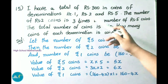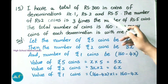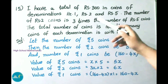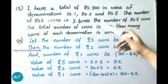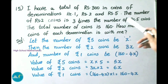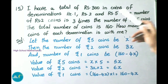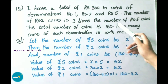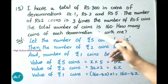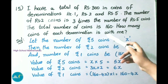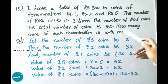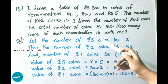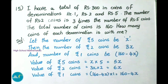See now question number 15. I have a total of 300 rupees in coins of denominations 1 rupee, 2 rupees and 5 rupees. The number of 2 rupee coins is 3 times the number of 5 rupee coins. The total number of coins is 160. How many coins of each denomination do I have?